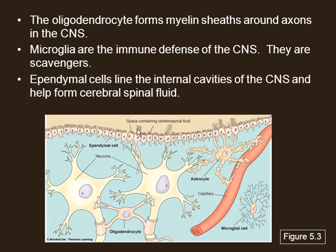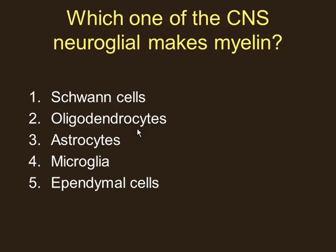Schwann cells are not in the CNS, but they make myelin in the peripheral nervous system — and unlike oligodendrocytes, they can regenerate. To summarize CNS glia: oligodendrocytes make myelin in the CNS; astrocytes support memory and form the blood-brain barrier; microglia are macrophages; ependymal cells line the ventricles and help circulate CSF.